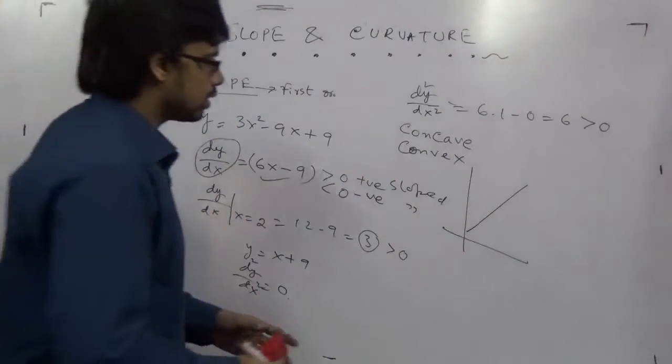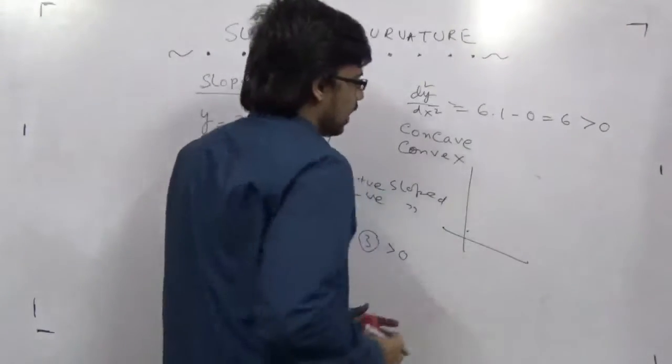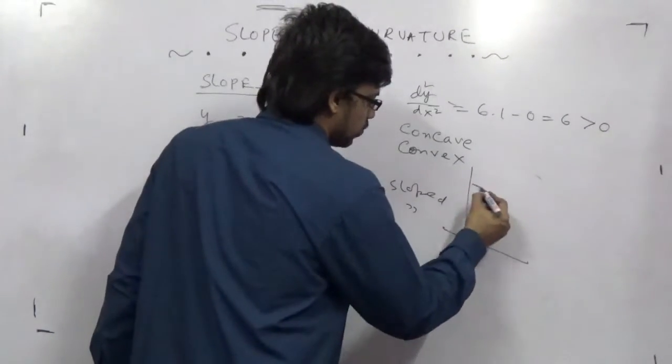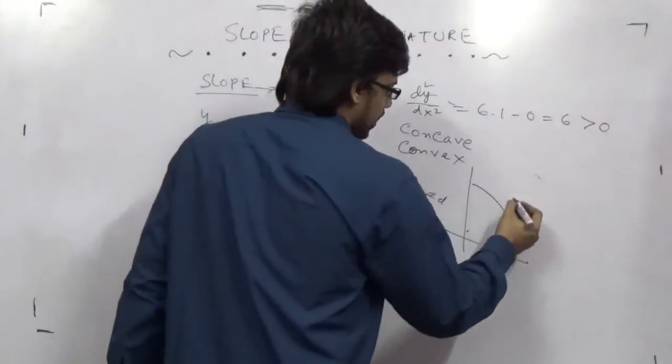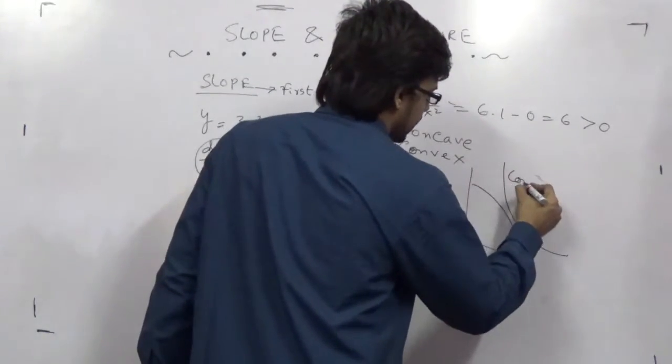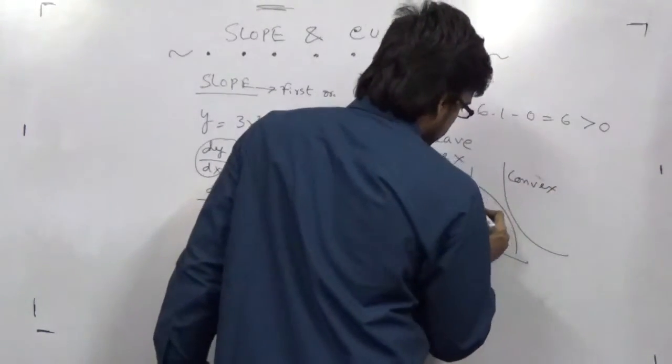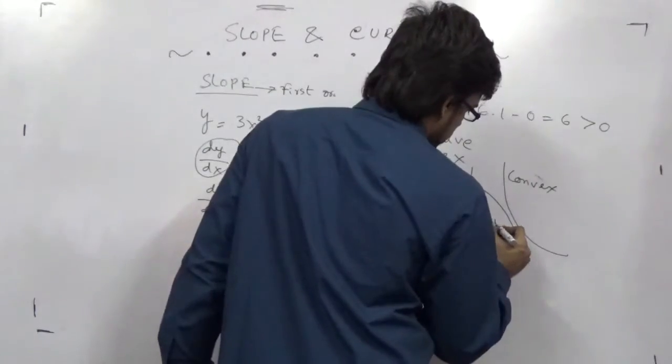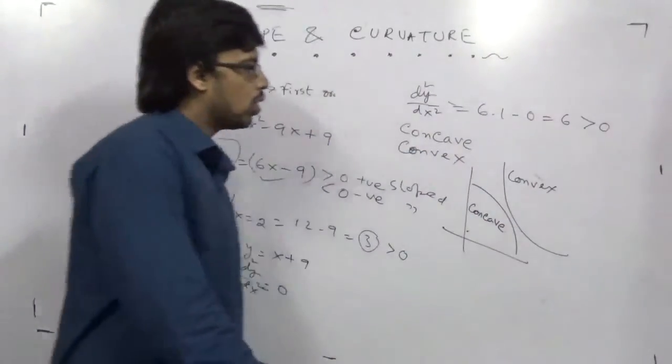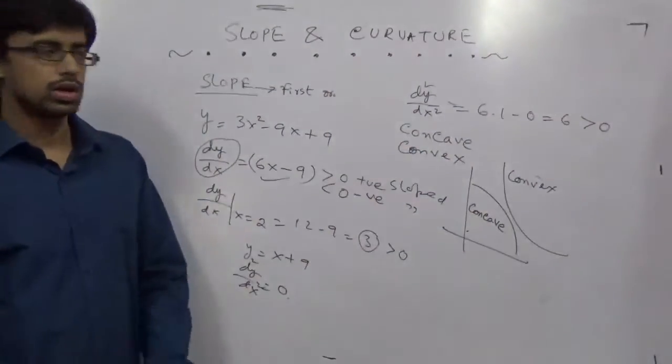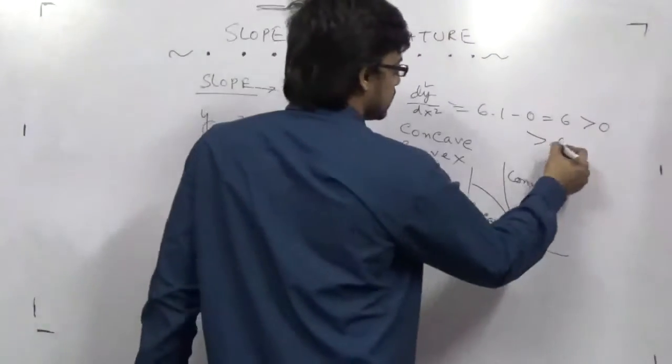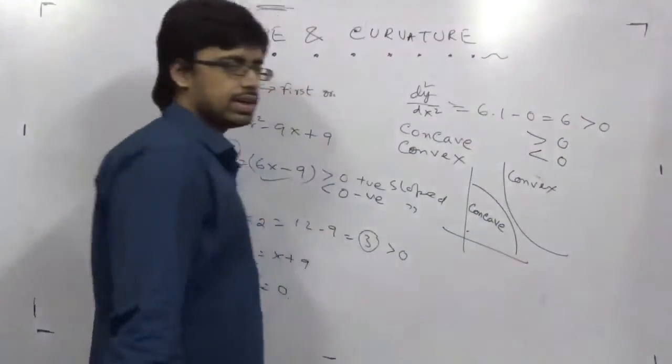So if you want to get a concave curve, it will look like this. A convex curve will look like this. We determine whether it's concave or convex by utilizing the second order condition, whether it is less than 0 or greater than 0.